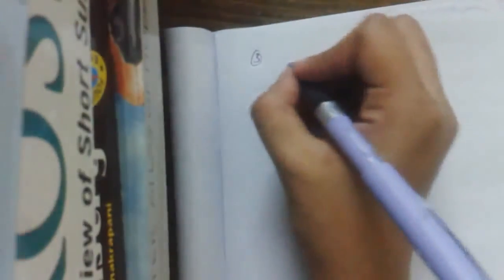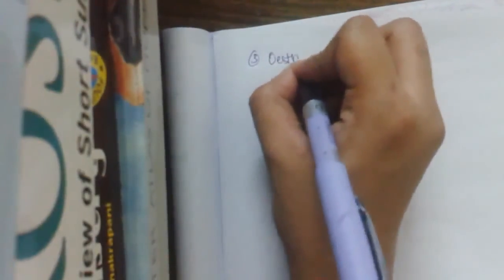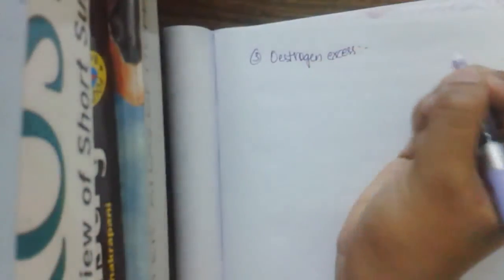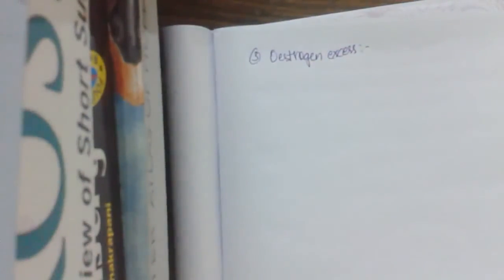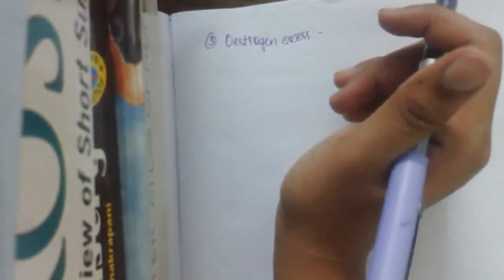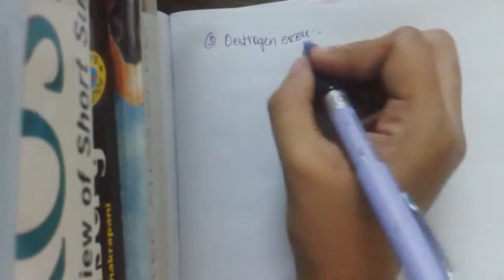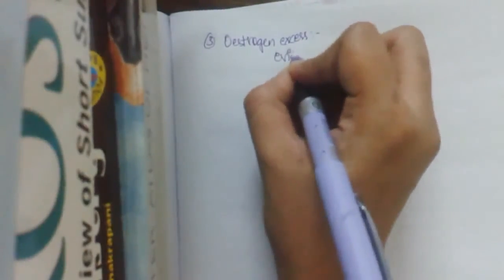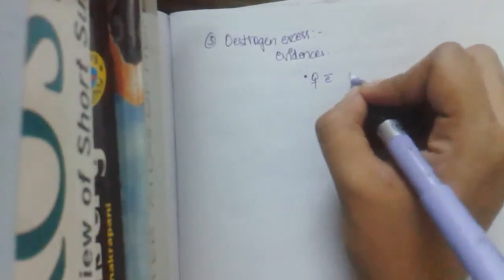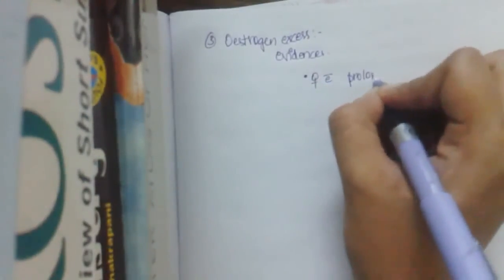And the third factor may be due to estrogen excess. Excess of estrogen also suggests as one of the etiological factors for breast carcinoma. So what are the evidences which support? The evidences are, so women with prolonged reproductive age.